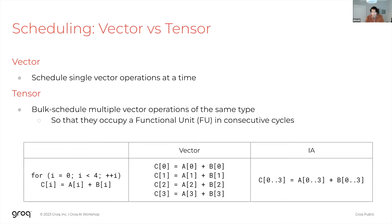We have two different scheduling approaches. Vector scheduling schedules a single vector operation at a time. Tensor scheduling, or bulk scheduling, bulk-schedules multiple vector operations of the same type so that they can occupy a functional unit in consecutive cycles.